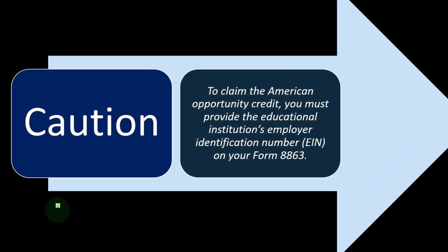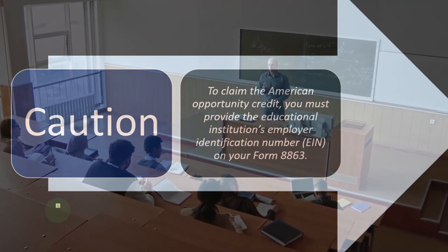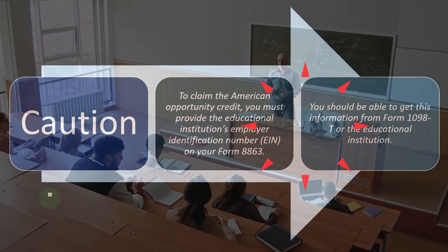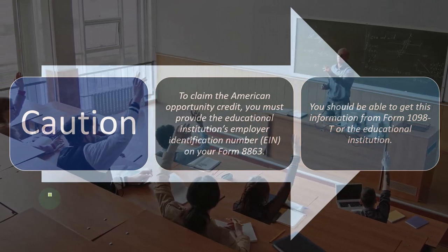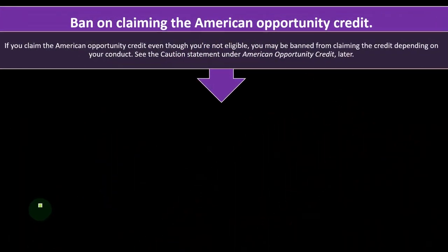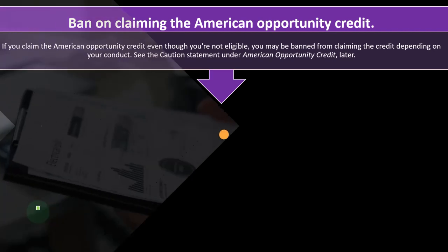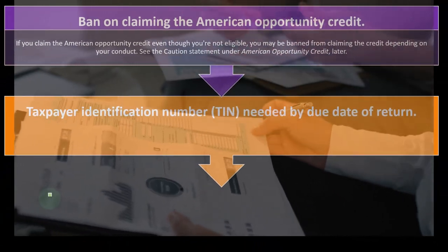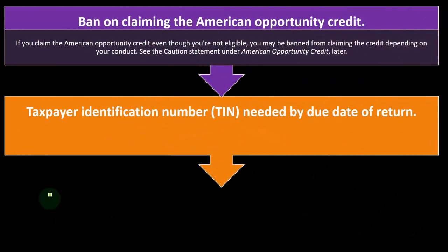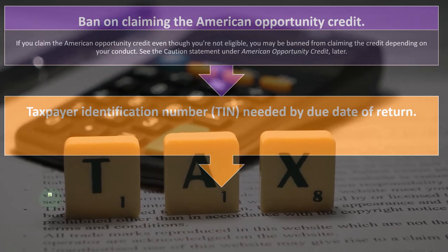Caution: To claim the American Opportunity Credit, you must provide the educational institution's employer identification number — the EIN — on Form 8863. You should be able to get this from Form 1098-T or from the educational institution directly. Also, there is a ban on claiming the American Opportunity Credit: if you claim it even though you're not eligible, you may be banned from claiming the credit depending on your conduct. These credits are the types of things that scammers and fraudsters are likely to try to take advantage of, so the IRS may restrict or ban those who abuse the American Opportunity Credit.